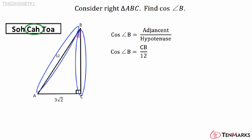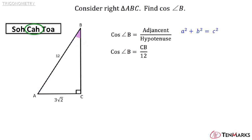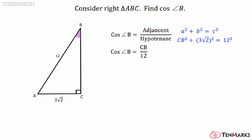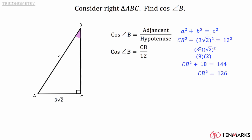Since this is a right triangle, you can use the Pythagorean theorem. Fill in the side lengths for B and C. To solve 3 square roots of 2 squared, square both parts separately. Simplify to get 9 times 2, which is equal to 18. Subtract 18 from both sides. To get CB by itself, take the square root of both sides. 126 is not a perfect square, but you can rewrite it as the square root of 9 times 14, since 9 is a perfect square. This can be rewritten as the square root of 9 times the square root of 14, and simplifies to 3 times the square root of 14.